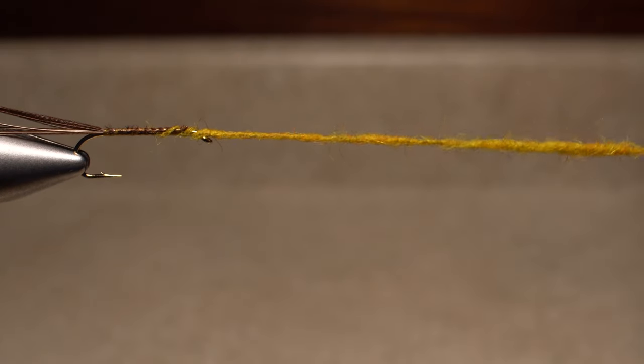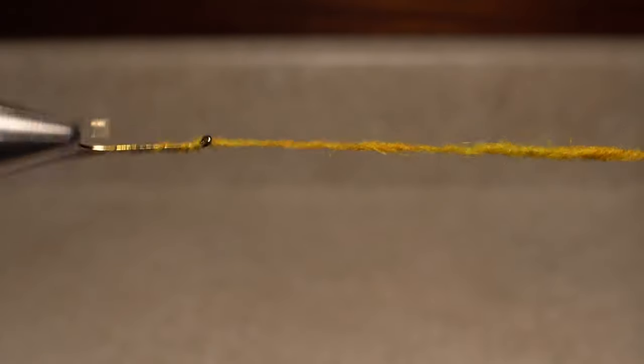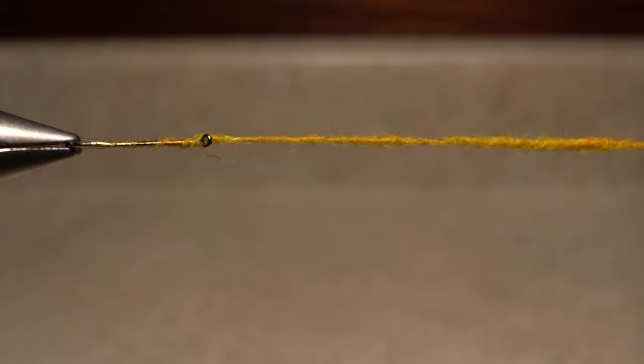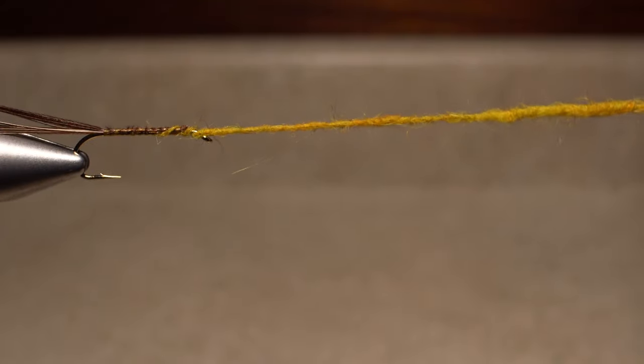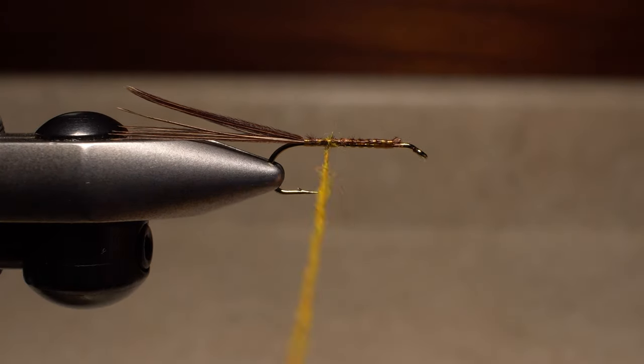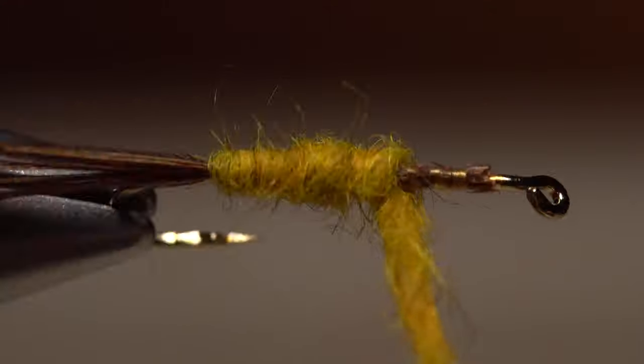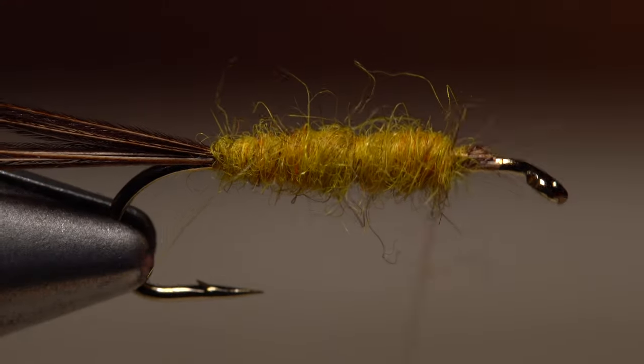I like to wind the noodle forward to behind the eye and catch the end of the dubbing there. This will allow me to hold the bobbin out parallel to the tying bench and spin the rotary vise which will in turn cord up and tighten the dubbing noodle until it resembles a twisted rope. I then unwind the rope before starting to build the body of the fly beginning right at the base of the tail and ending at the initial tie-in point.